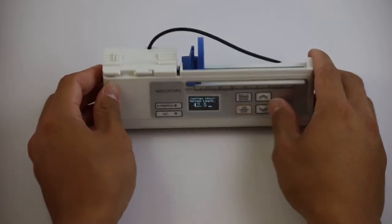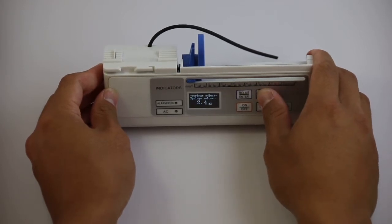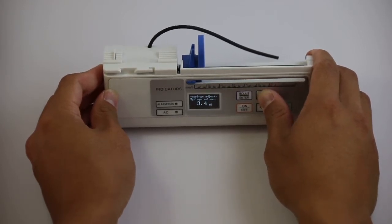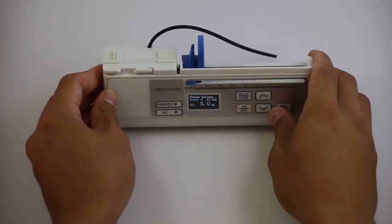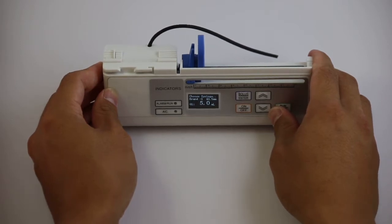Click bolus enter again, at which point you would need to set the syringe effective volume. Please refer to the volume of the syringe that corresponds to the length of the syringe measured in the previous step. Once you've completed this, click enter again to finish the syringe calibration.